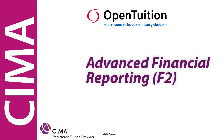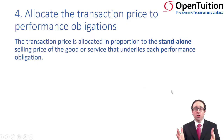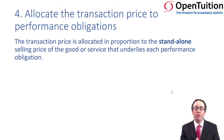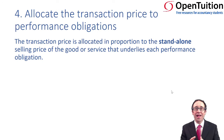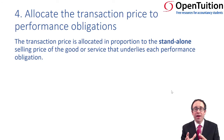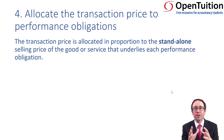This is a lecture from OpenTuition. To benefit from the lecture, you should download the free lecture notes from opentuition.com. We're going to go through the fourth step within our revenue recognition process — allocating the transaction price that we calculated in step three, splitting it across the performance obligations identified in step two.